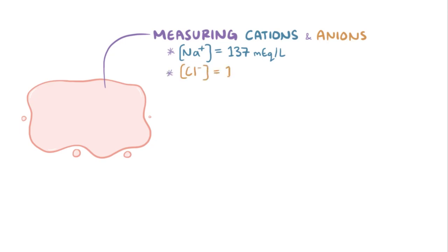Let's say that we try to measure the concentration of cations and anions in our plasma. Unfortunately, not all the ions are easy or convenient to measure. Specifically, among cations, usually just sodium is measured, which is typically around 137 milliequivalents per liter. Among anions, chloride is measured, which is about 104 milliequivalents per liter, as well as bicarbonate, which is around 24 milliequivalents per liter.